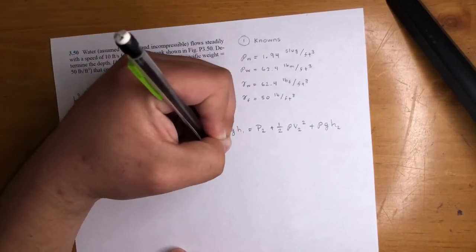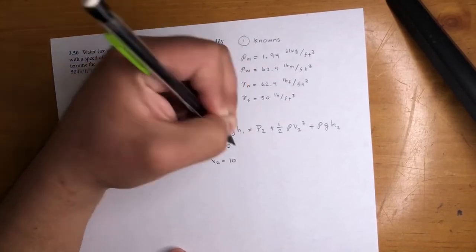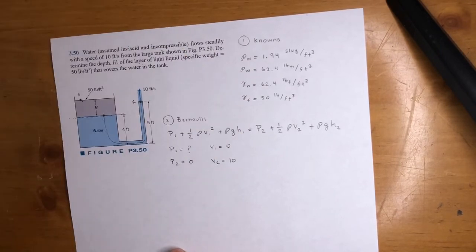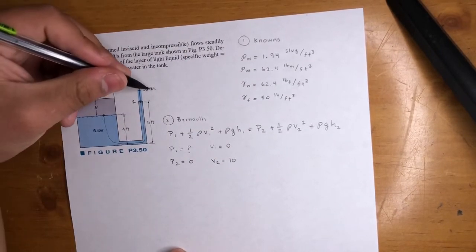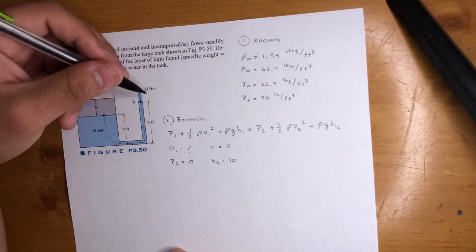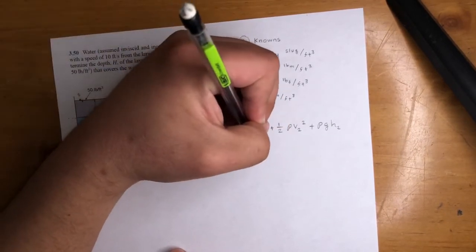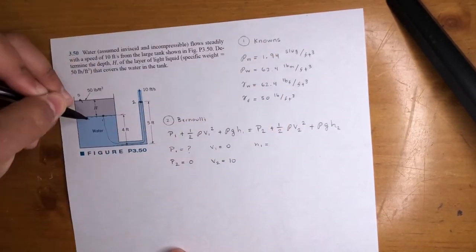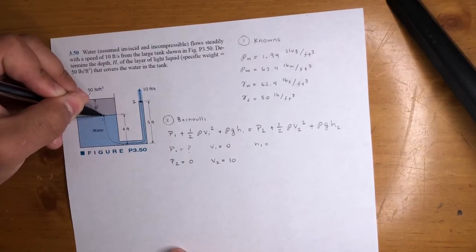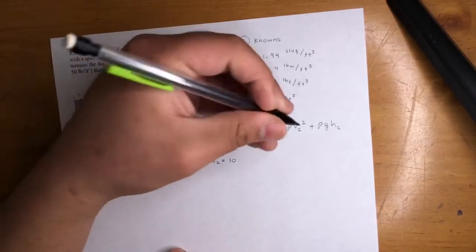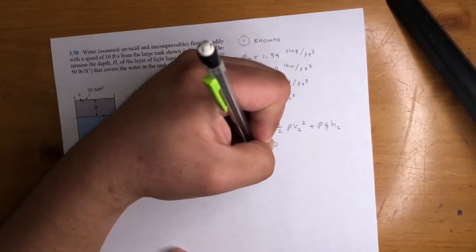V2 is equal to 10 feet per second. I'm not going to write the units, but make sure it's not an inch per second. Sometimes they try to trick you, but cool. H1 is equal to zero, right? This is our reference. So this point is right on the reference line, the datum line, and H2.